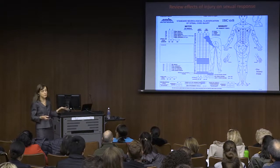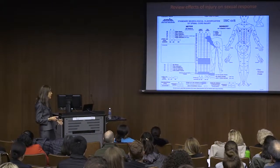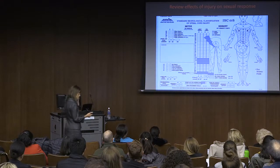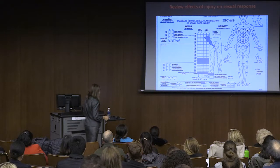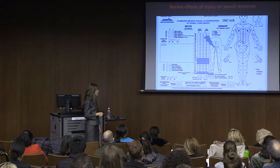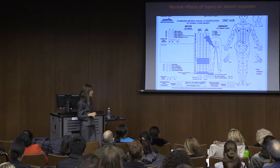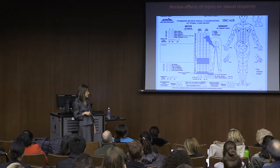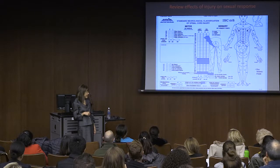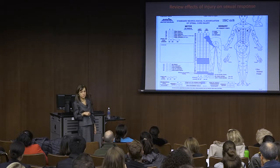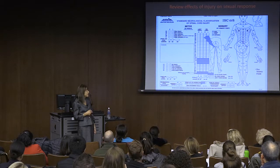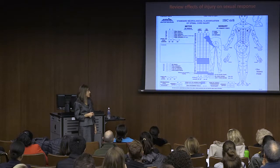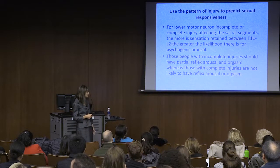We know that just from seeing the person. We put some information on the international standards form, but there's a gap in that form—and this is an old form, since the new one is more detailed—it does not include the bulbocavernous reflex. So we need to get our information and record it somewhere.